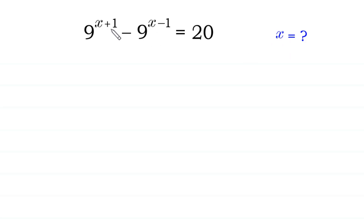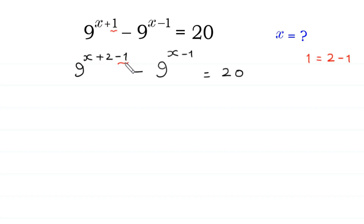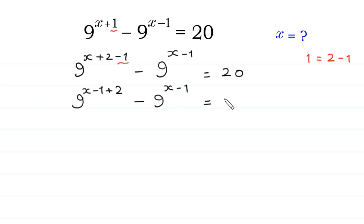First of all, we split the exponent x+1 as (x-1)+2. So we rewrite the equation as 9 to the power x minus 1 plus 2, minus 9 to the power x minus 1, is equal to 20.